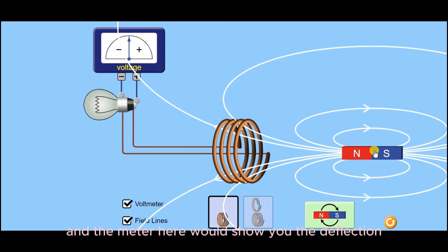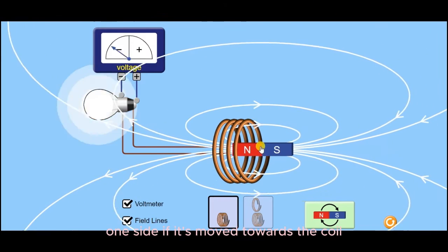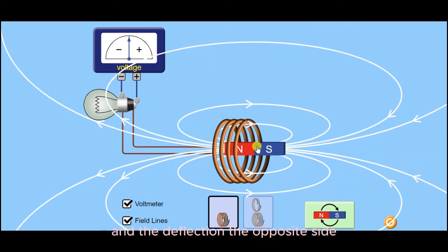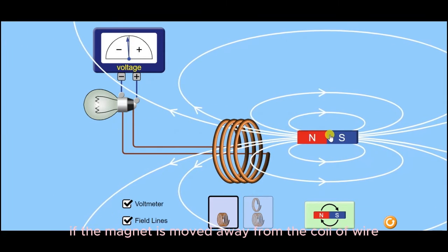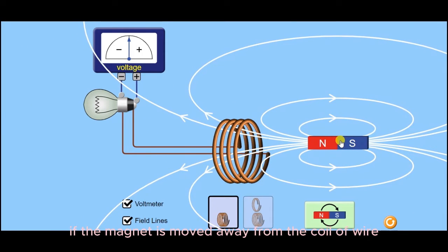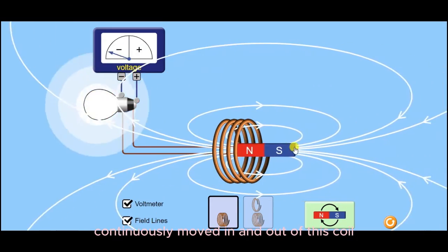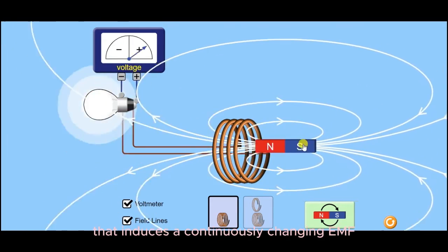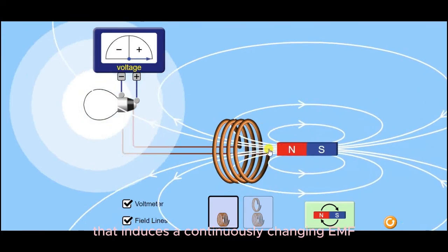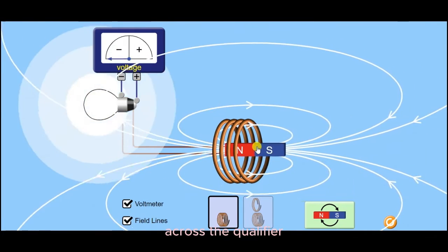And the meter here would show you the deflection on one side if it's moved towards the coil, and the deflection on the opposite side if the magnet is moved away from the coil of wire. As the magnet is continuously moved in and out of this coil of wire, that induces a continuously changing EMF across the coil of wire.